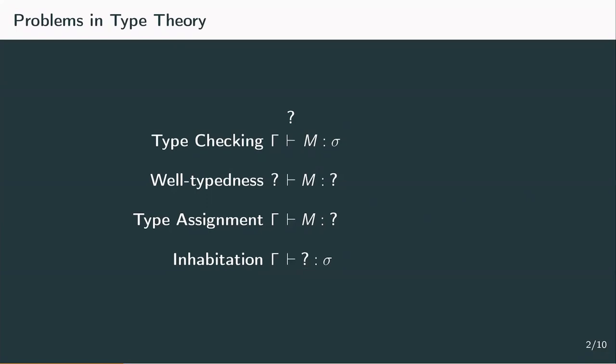For the simply typed lambda calculus, all of these problems are decidable in polynomial time. This is the case for most of the other systems that we're going to look at later on. For an overview over the computational complexity, refer to video 6 on the lambda cube, where we give an overview over these results.